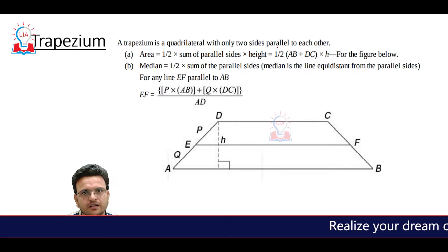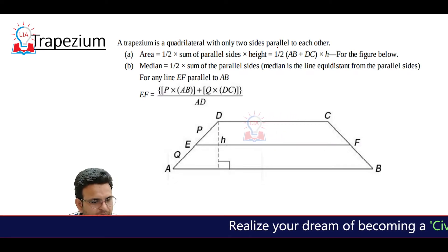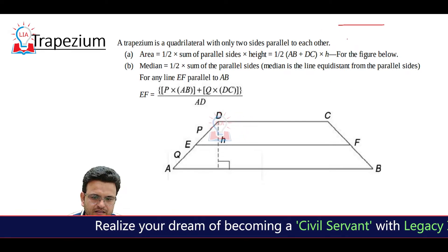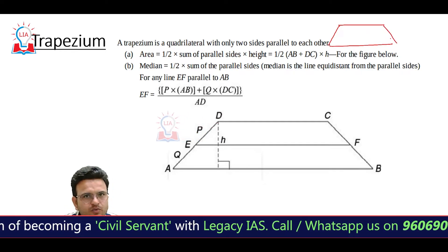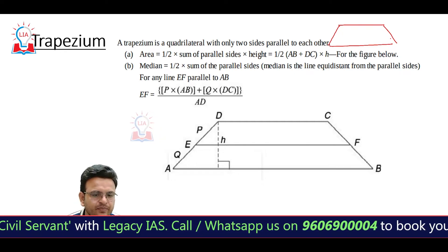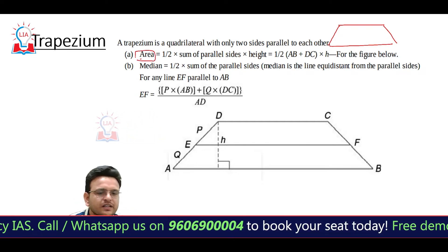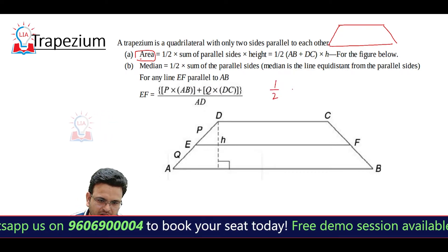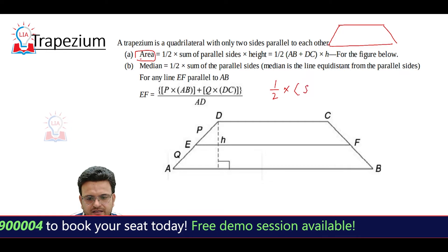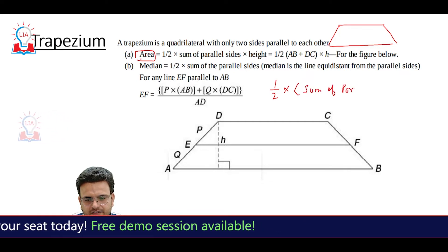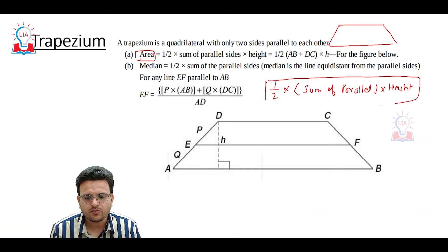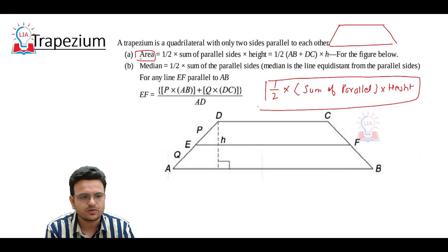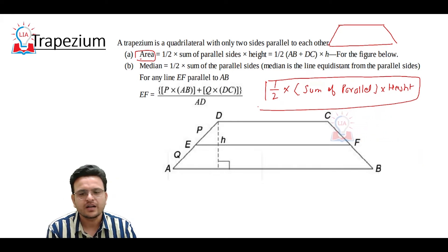One more important concept is the trapezium. In a trapezium, there are two parallel lines, but the angle between them is not 90 degrees. The area of a trapezium is half the sum of the parallel sides multiplied by the height. This formula is very important and will help you solve questions on trapezium directly.